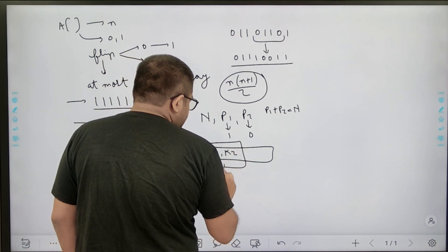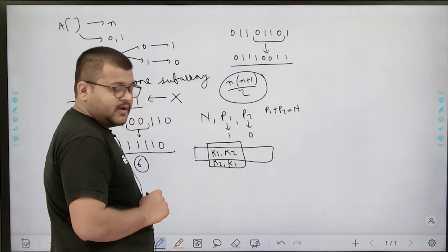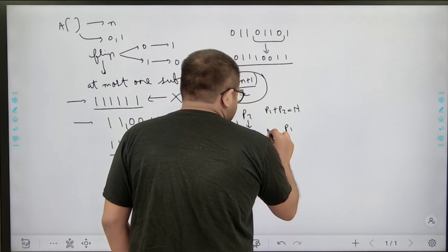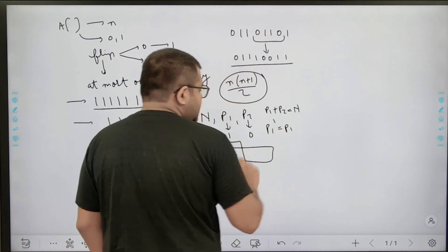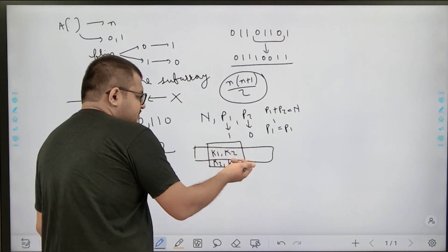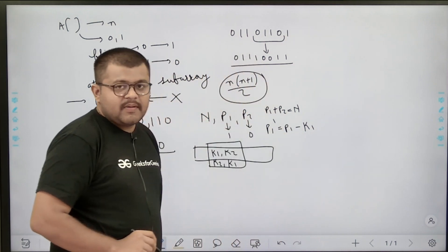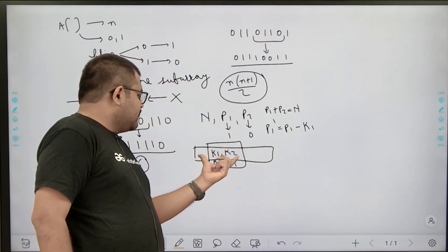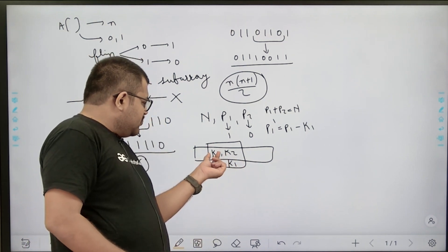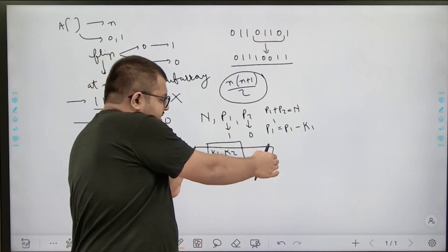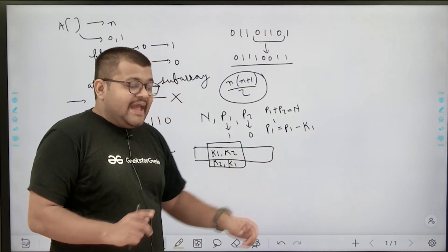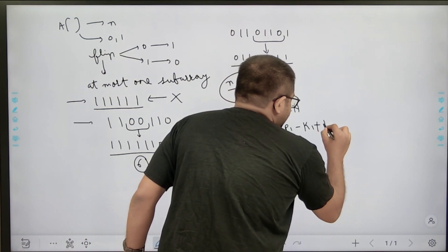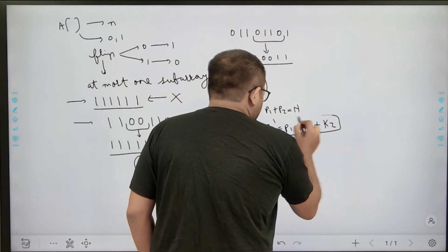After flipping that sub-array, I will have k2 ones and k1 zeros within it. The change to p1 (the total number of ones) is: the k1 ones in the sub-array become zeros, so ones decrease by k1, and the k2 zeros become ones, so ones increase by k2. Therefore, the final number of ones is: p1_dash = p1 - k1 + k2.